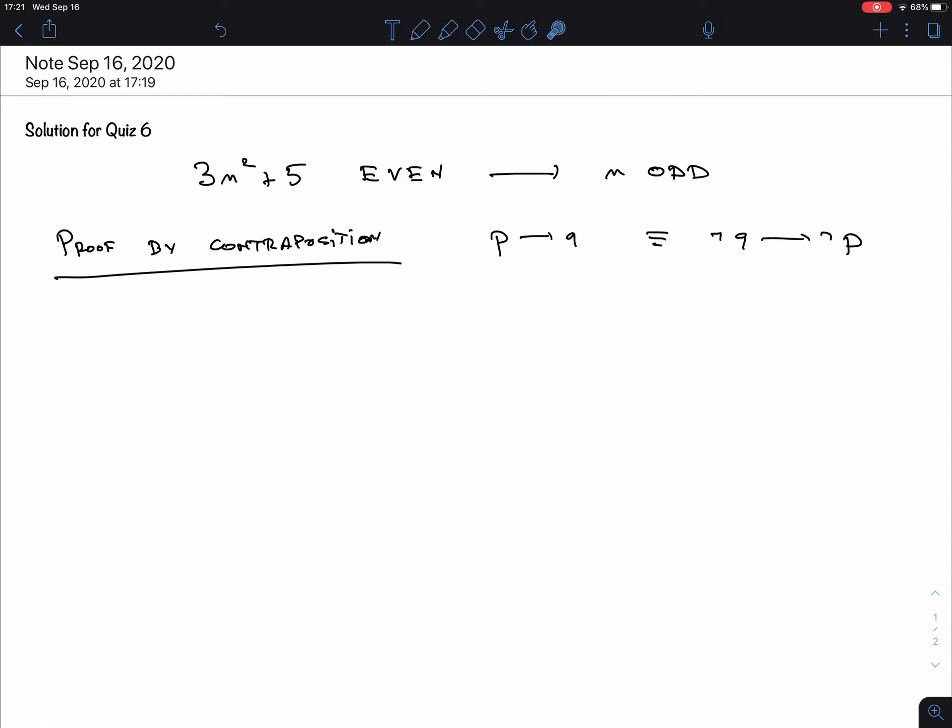That would be: you have to assume the negation of this, which means if n is even, then 3n squared plus 5 is odd - that's the negation, right? And then once you have done that, you do a direct proof. This is direct proof, which means that we assume the hypothesis.